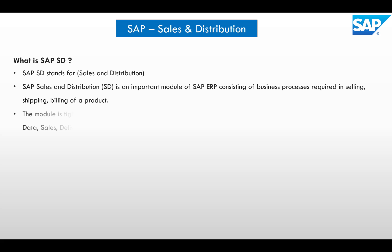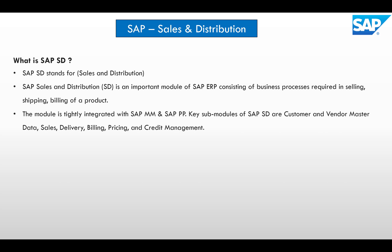The SAP SD module is tightly integrated with SAP MM and SAP PP. The SD module is integrated with the procurement process as well as the production process so that we can carry out the sales and distribution process. Key sub-modules of SAP SD are customer master data, vendor master data, sales data, delivery data, billing data, pricing data, and credit management.